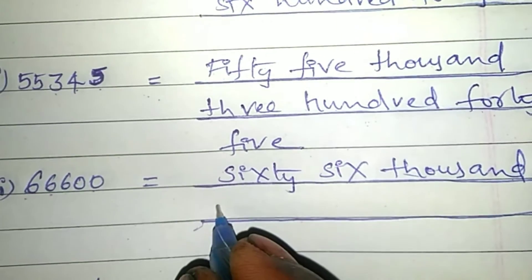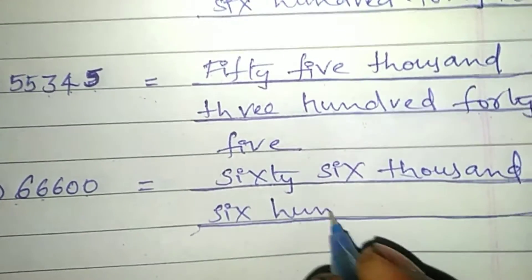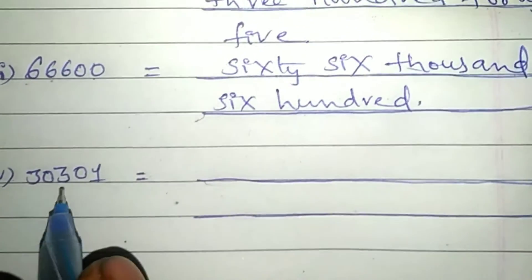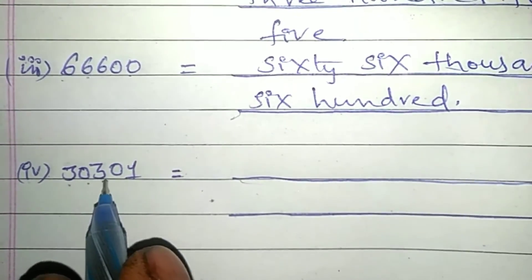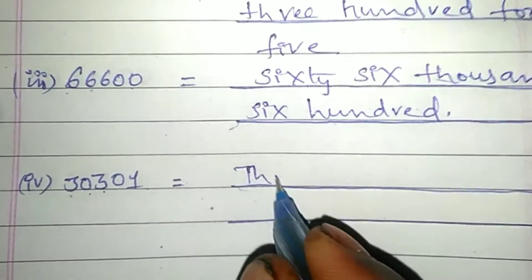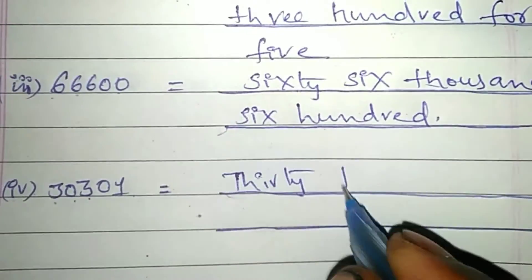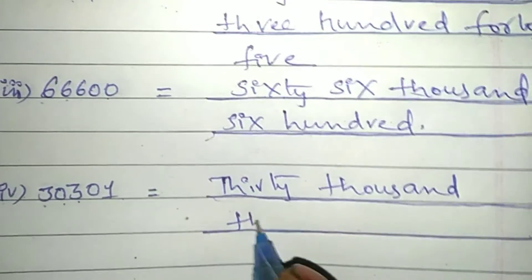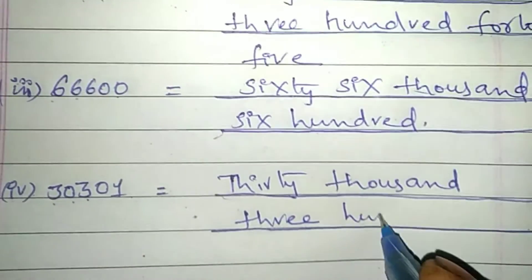Then, sixty-six thousand, six hundred. Next one: 30,301. Thirty thousand, three hundred and one.